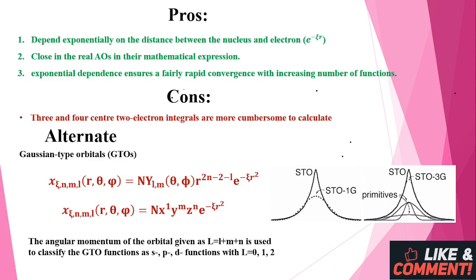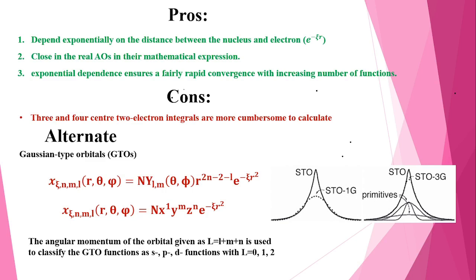The pros of using Slater-type orbitals are that they are very close to real atomic orbitals — if we are mathematically describing these orbitals, they closely resemble the real orbitals — and their exponential dependence converges rapidly with an increasing number of functions. The cons are that three- or four-center two-electron integrals are very hard to calculate by computers, so we look for an alternative: Gaussian-type orbitals.